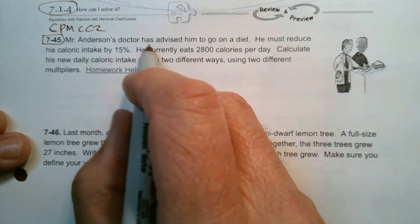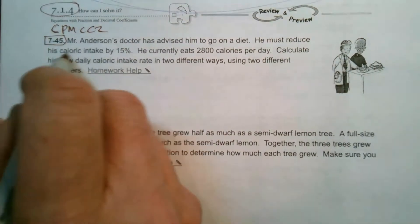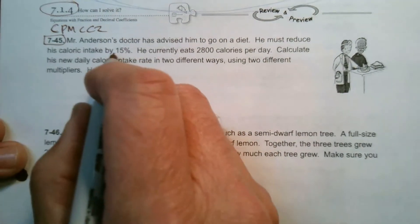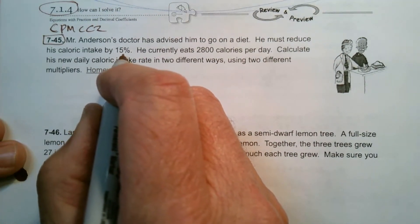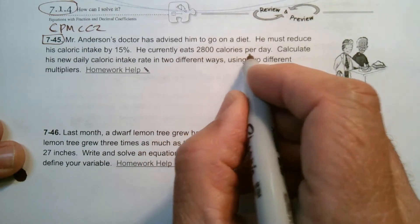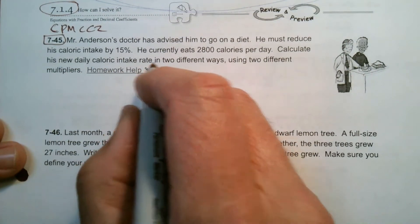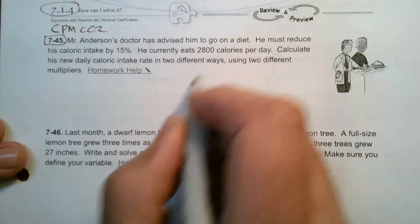Mr. Anderson's doctor has advised him to go on a diet. He must reduce his caloric intake by 15%. He currently eats 2,800 calories per day. Calculate his new daily caloric intake rate in two different ways.